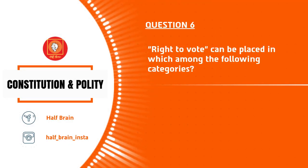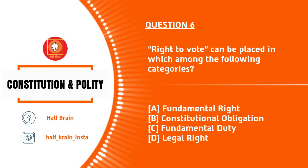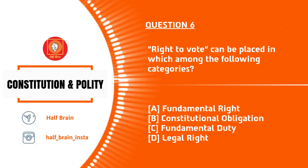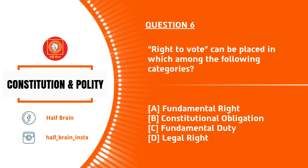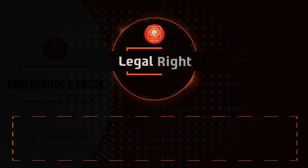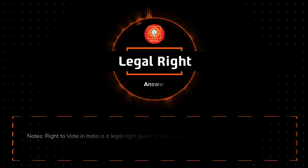Next, question number 6: Right to vote can be placed in which among the following categories? Options are fundamental right, constitutional obligation, fundamental duty, or legal right. The answer is legal right.